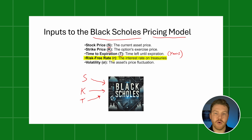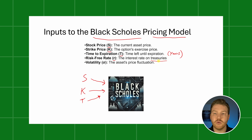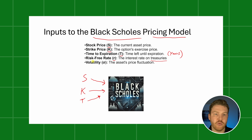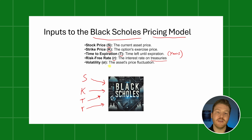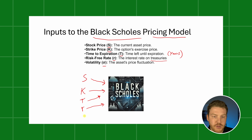Then we have the risk-free rate, denoted as R, which is the interest rate typically on treasuries. We can use the risk-free rate of whatever treasury security matches the time to maturity — so if it's a one-year time to expiration, we use the one-year treasury's risk-free rate. Finally, we have the volatility, or implied volatility, which represents the asset's price fluctuation, and this is also passed in as an input to the Black-Scholes model.